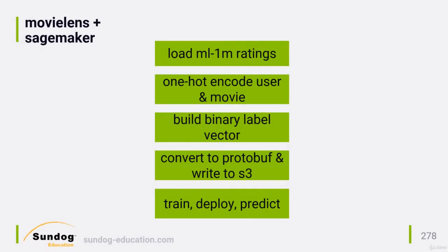If you remember back to our matrix factorization section, we talked about an algorithm called factorization machines, which is a more general-purpose means of factorizing sparse matrices, such as the user-movie ratings matrix we have with our MovieLens data. SageMaker includes an implementation of factorization machines, so this is our chance to finally try them out. And since we're on the cloud with AWS, we can do this at a large scale.